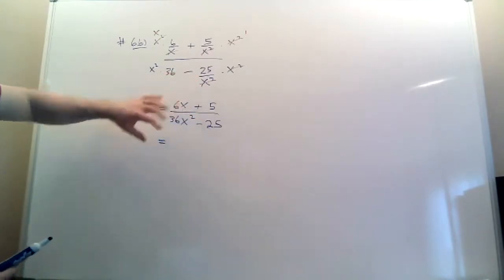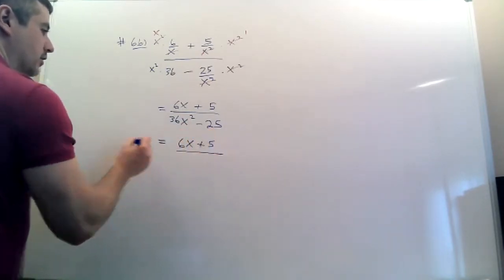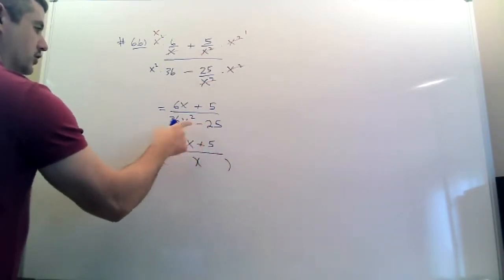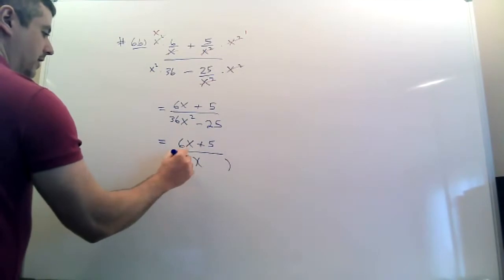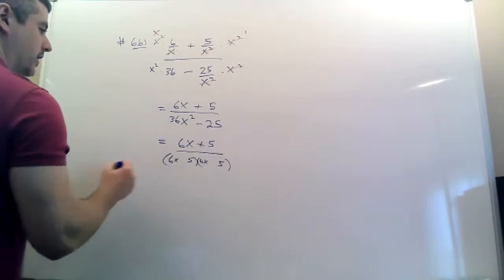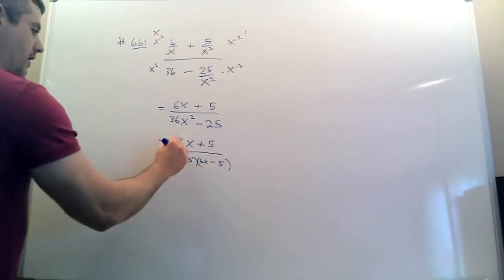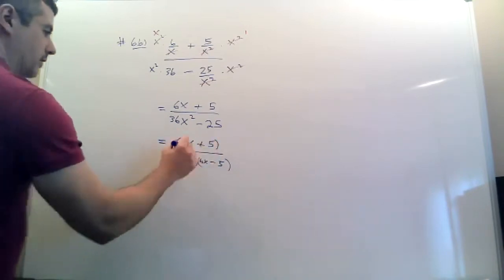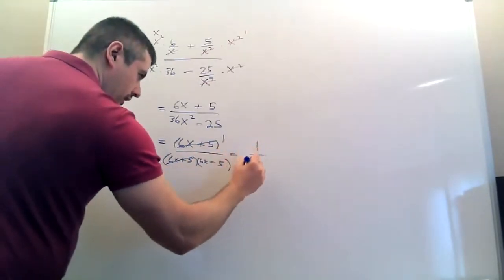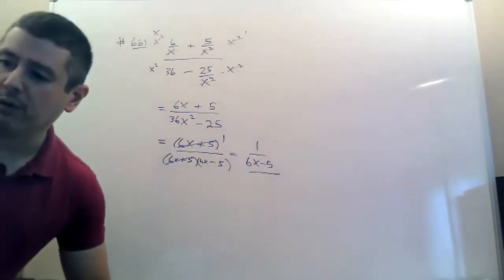A mistake would be to start trying to cross these out — you can't do that. What you have to do is factor. The top does not factor: there's no GCF, it's not a trinomial, there's not even a squared term. The bottom factors — it's a difference of squares. Something times itself to make 36, something times itself to make 25, give them opposite signs — that's type three. Then you notice you can cross out. When you cross them out, put a one there; make sure the one goes on top. That's the little trap — you forget to put the one on top.